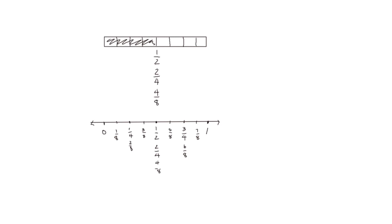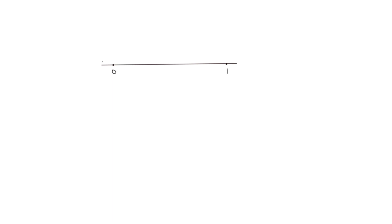Let's try another problem. Now we're going to start with a number line and mark our zero point and our one point. This time we're going to start by dividing the number line into thirds. So this is one third and two thirds, and we know that one would be equal to three thirds.